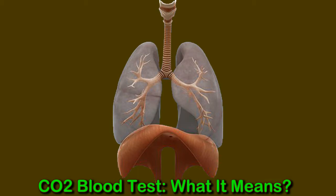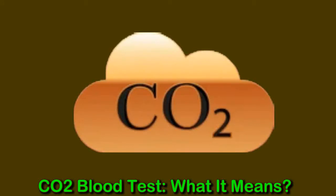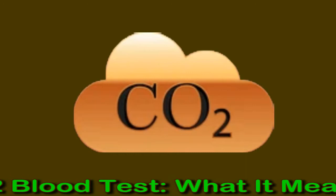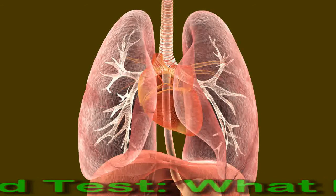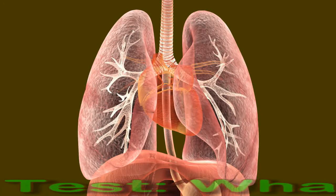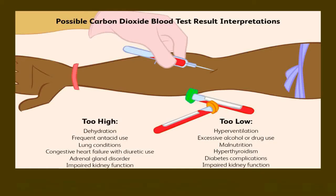It is usually part of a larger test called an electrolyte panel. The kidneys and lungs maintain the concentration of carbon dioxide in the blood. If a person's blood carbon dioxide levels are above the normal range, a doctor may request the test to check kidney and lung function, to assess other gases in the blood, or to check for fluid retention. In this video we look at the carbon dioxide test, normal blood carbon dioxide levels, and what abnormal results might mean.